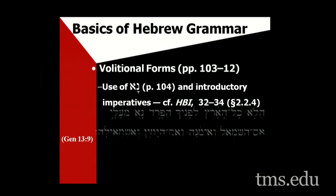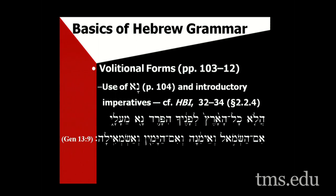Volitional forms: in Genesis 13:9 — 'Is not all the land before you? Separate immediately from me. If to the left I will go to the right, and if to the right then I will go to the left' — why the 'na' there? Abraham is not telling Lot 'please separate from me.' He's saying 'do it now.' There had been a fight between their herdsmen. The 'na' is a sense of urgency. He is the senior person telling his younger nephew: get out of here now, I don't want this to continue, you choose where you want to go and I'll go the other way.